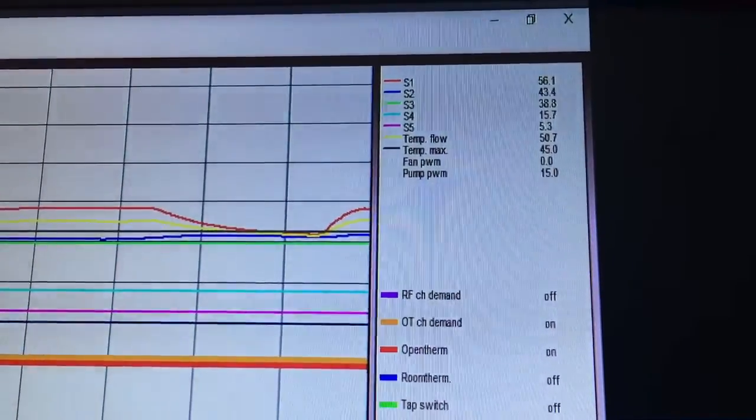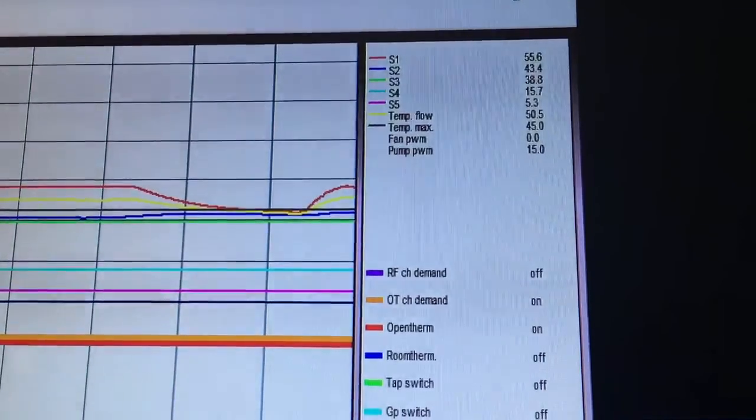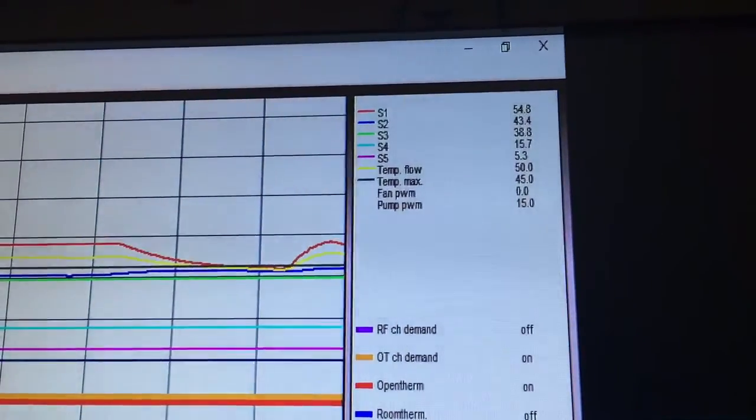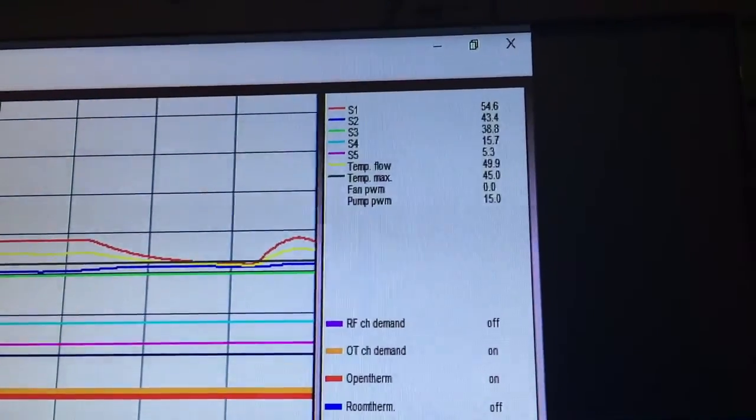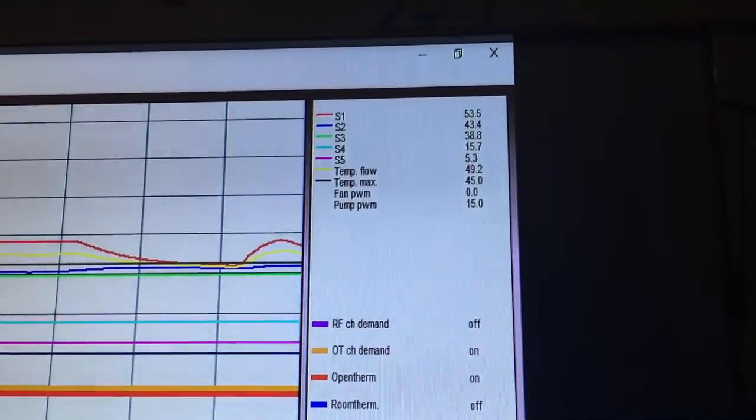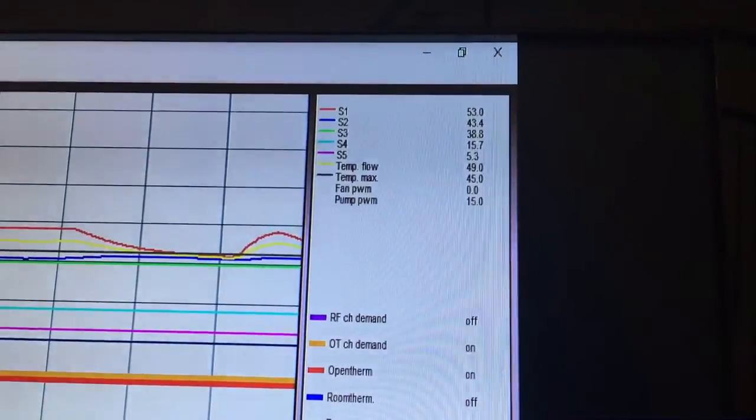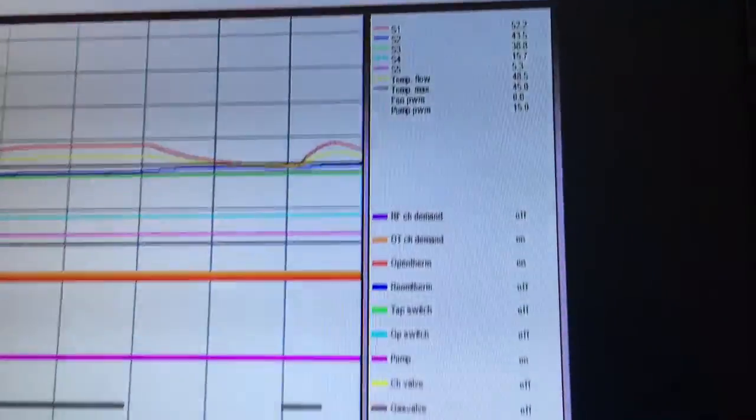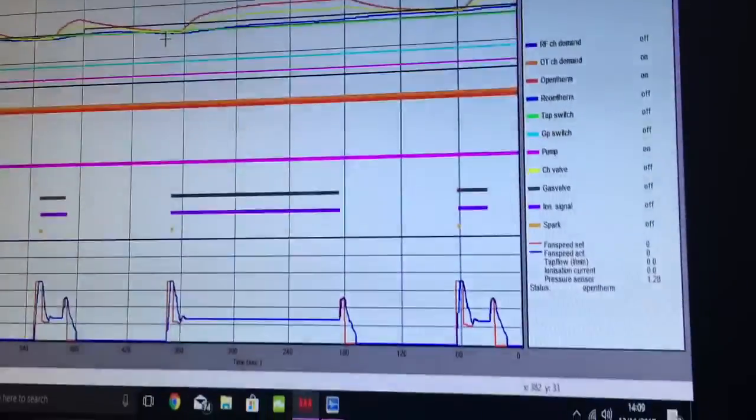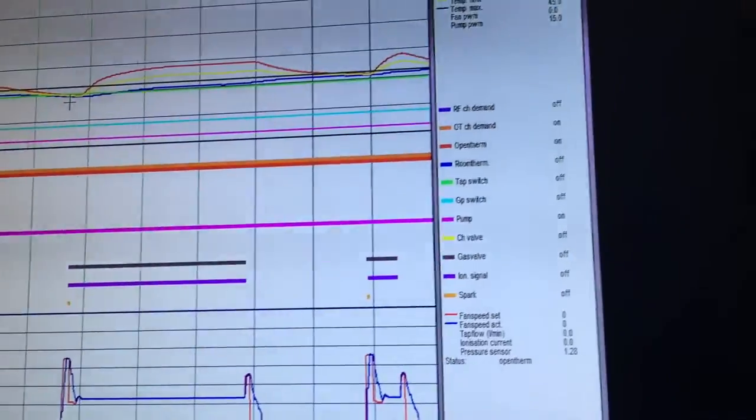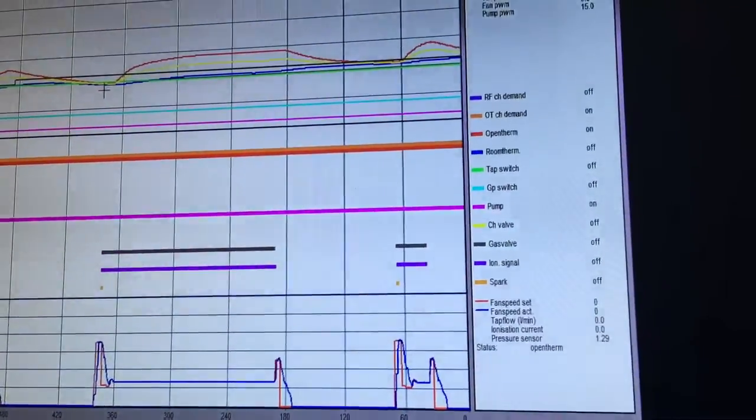But basically with a set point of 20 degrees, which is what it's based on, and curve 16, which I've set, it's giving us a required temp max of 45 degrees Celsius based on an outside air temperature 5.3 degrees. And what you can see is the boiler is cutting in and out on the gas valve because the heat emitter that I'm using is undersized to the appliance, so we are getting a little bit of cycling on the burner.